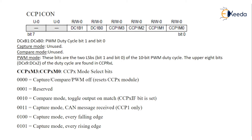Each CCP module has three registers. One is CCPxCON, which is an 8-bit control register. We have CCP1CON, CCP2CON, and CCP3CON registers. From this control register we select one of the modes: capture, compare, or PWM.